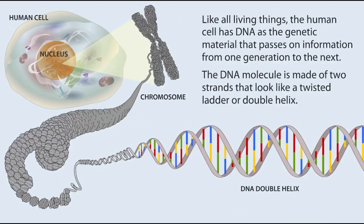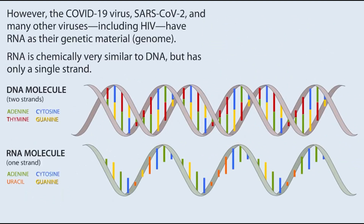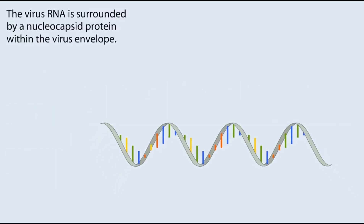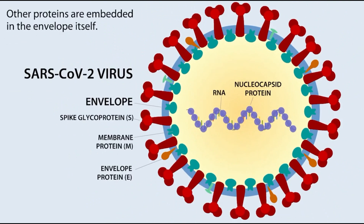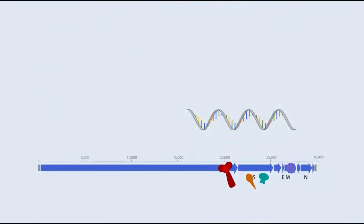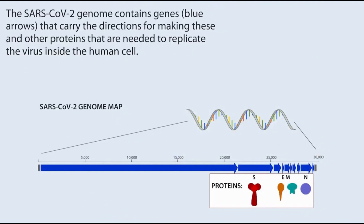Like all living things, the human cell has DNA as the genetic material that passes on information from one generation to the next. The DNA molecule is made up of two strands that look like a twisted ladder or double helix. However, the COVID-19 virus, SARS-CoV-2, and many other viruses including HIV have RNA as their genetic material. RNA is chemically very similar to DNA but has only a single strand. The virus RNA is surrounded by a nucleocapsid protein within the virus envelope. Other proteins are embedded in the envelope itself. The SARS-CoV-2 genome contains genes that carry the directions for making these and other proteins needed to replicate the virus inside the human cell.